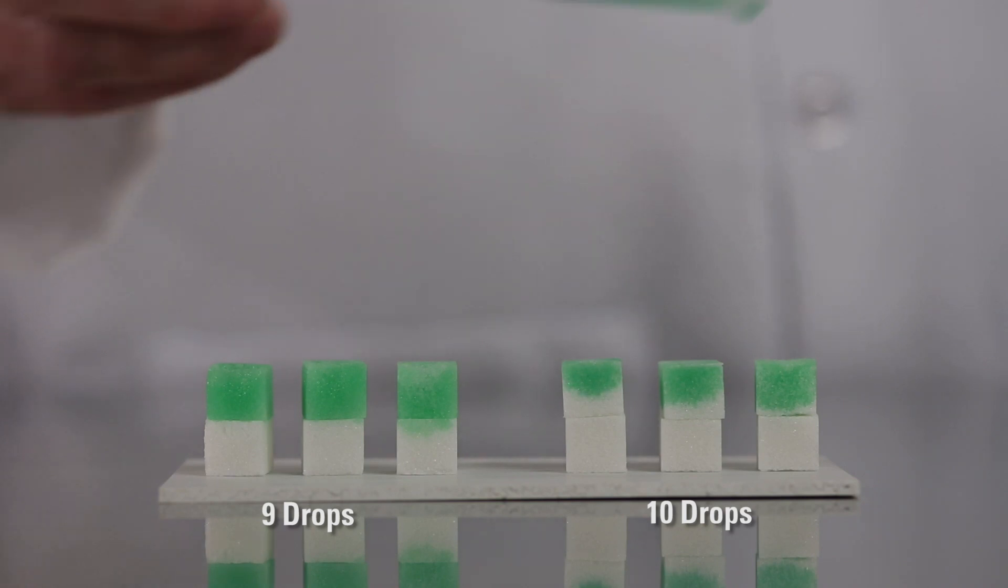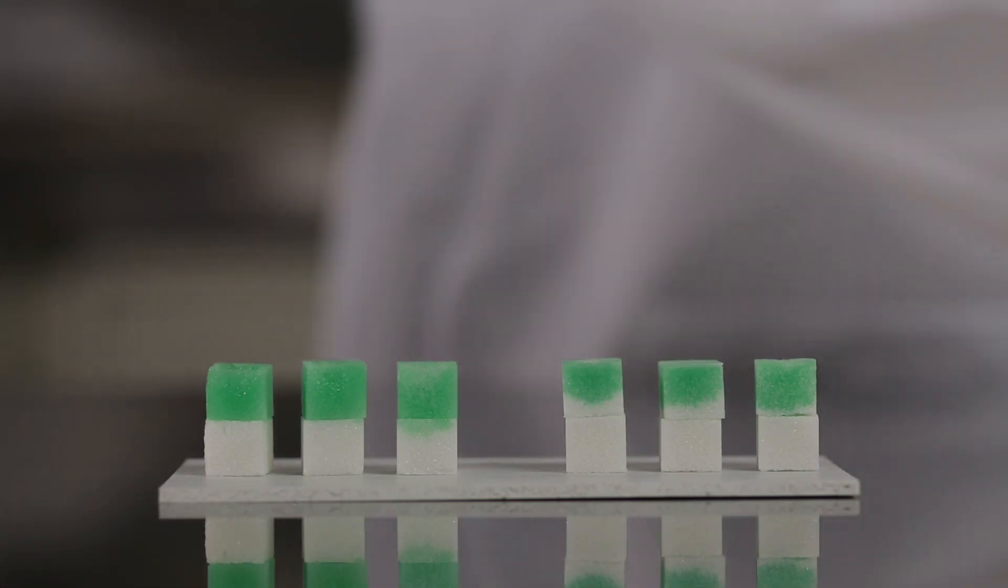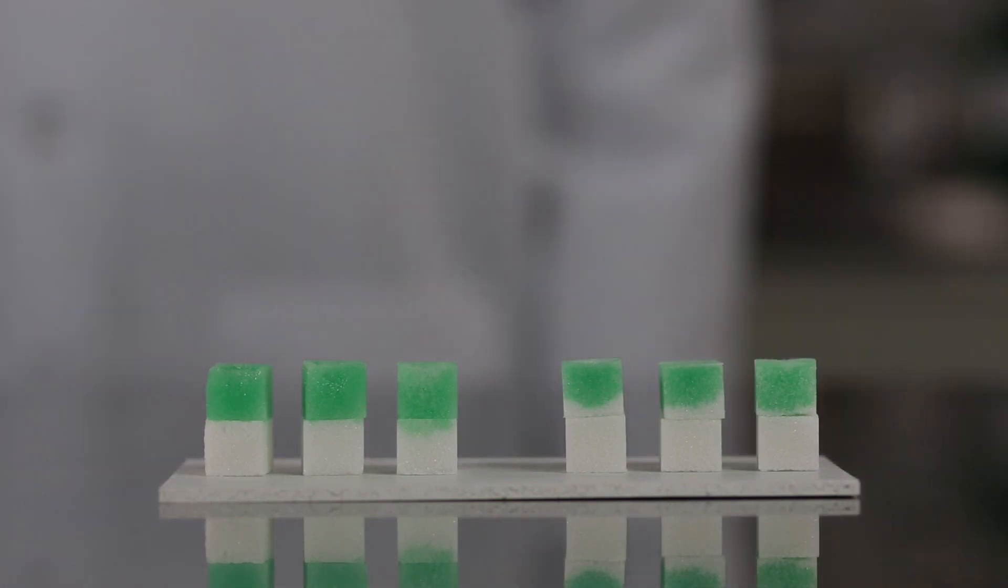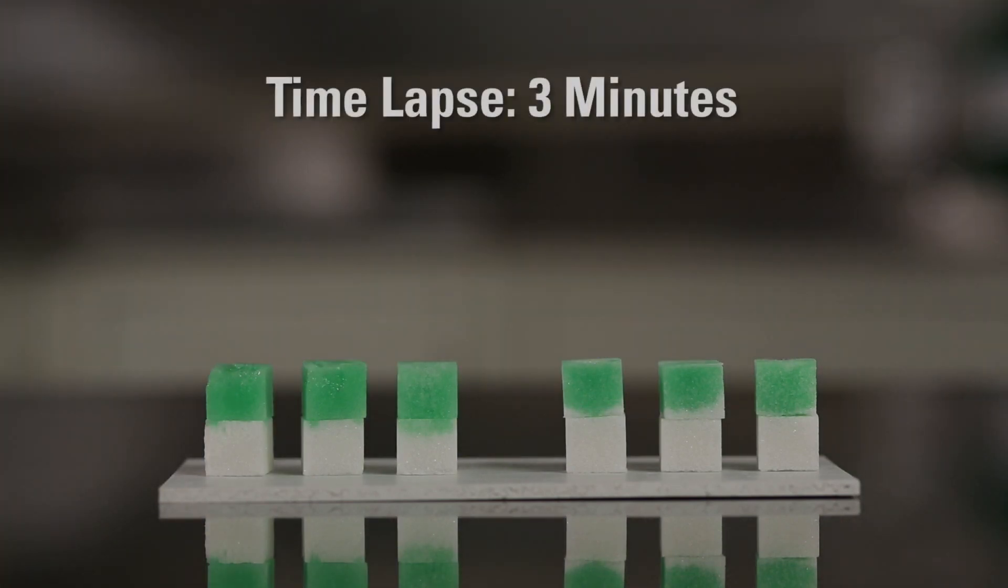For the next three minutes, monitor the movement of the water in both groups. Compressed sugar cubes consist of both micro and macro pores similar to soil particles. APSA 80 stays in the top sugar cube while untreated water penetrates into the second cube.